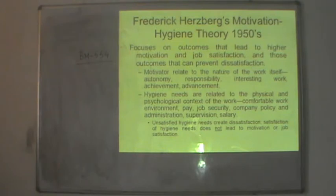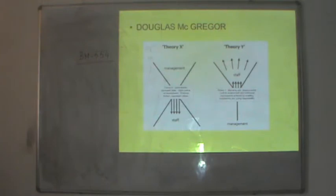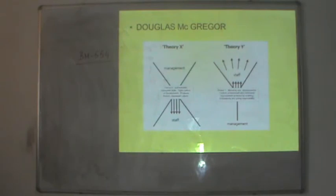The next content theory is McGregor's Theory X and Theory Y. This theory explains two sets of people in the organization — those who fall under Theory X and those who fall under Theory Y. McGregor tried to explain these two types of people working in organizations and how each type can be motivated.